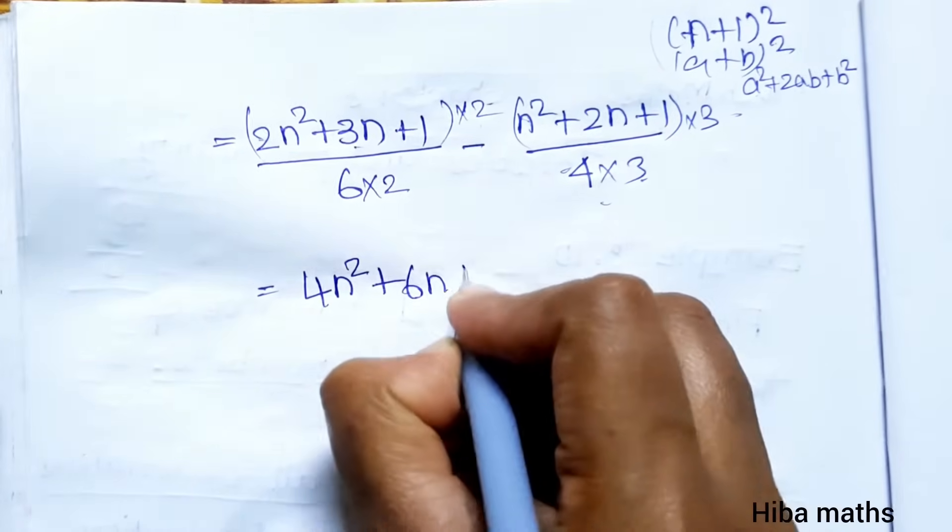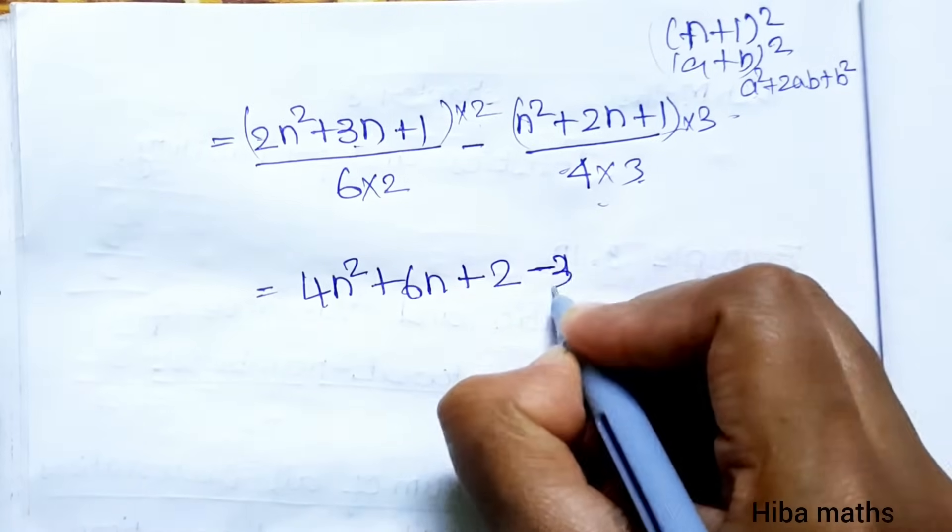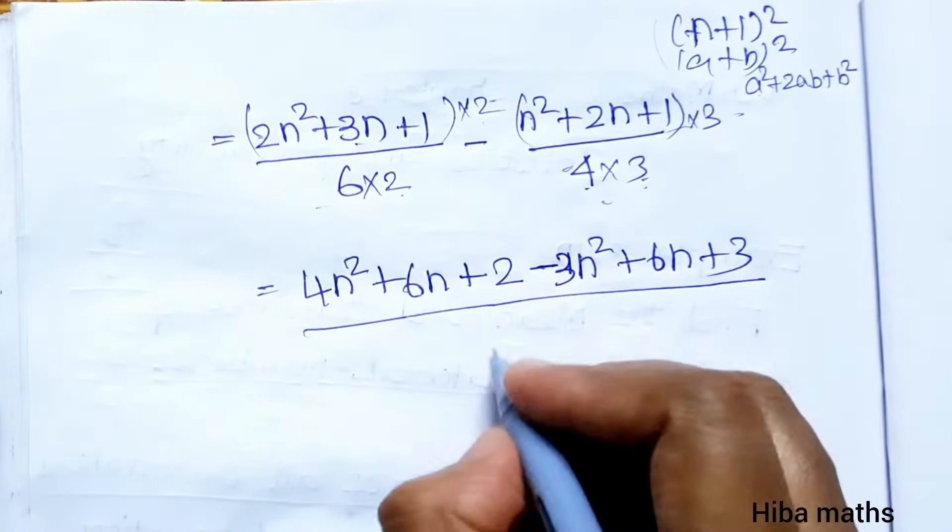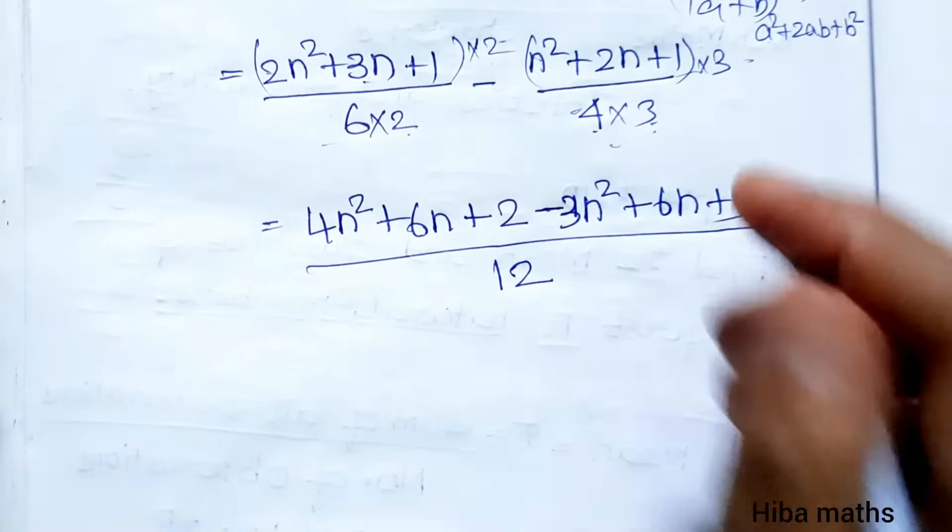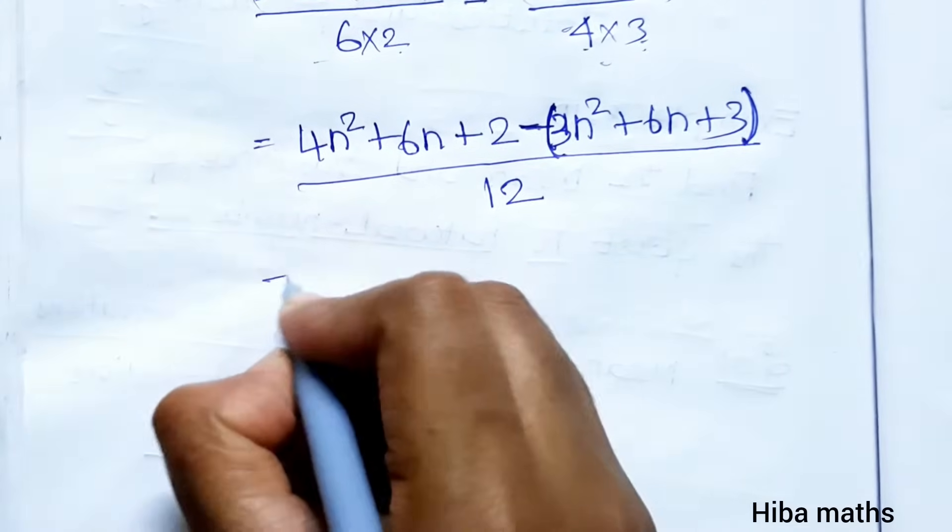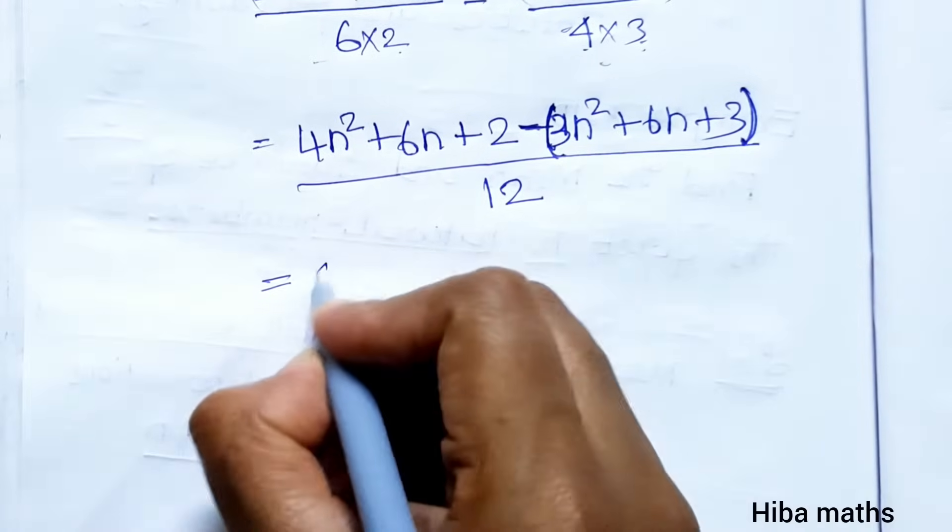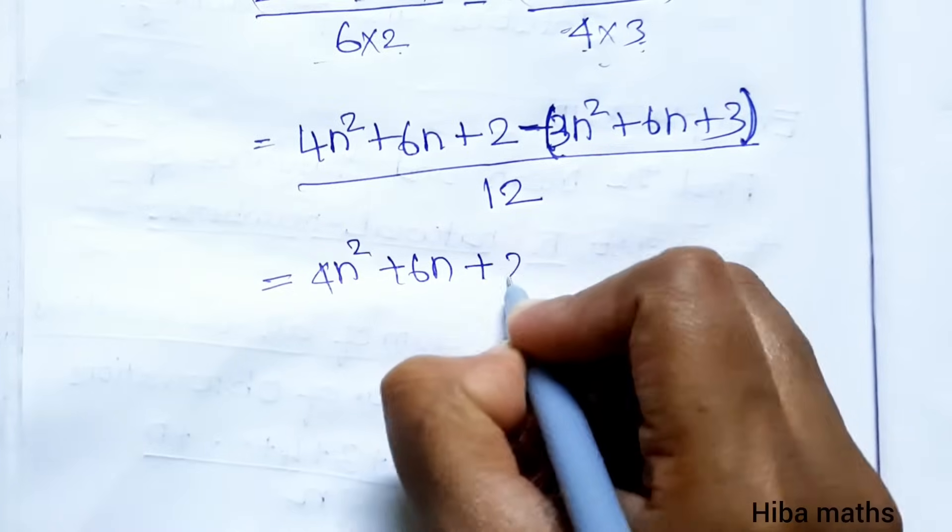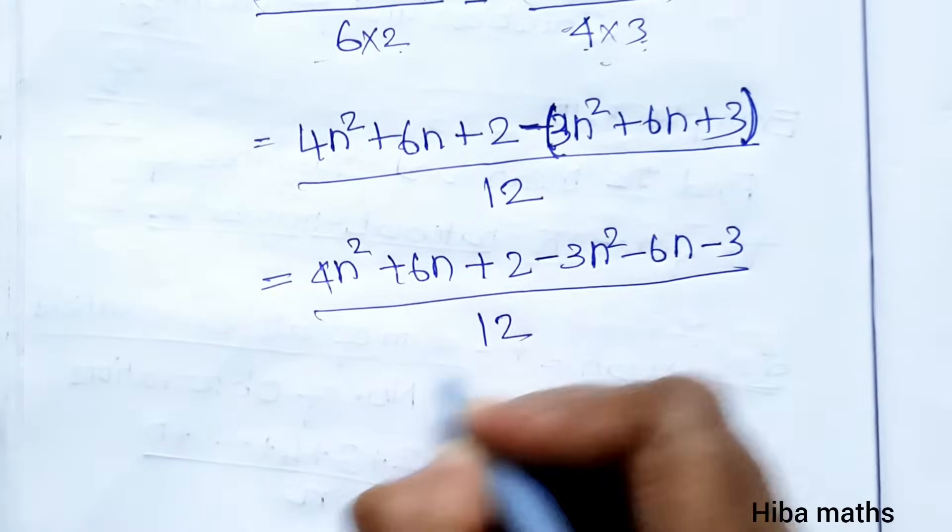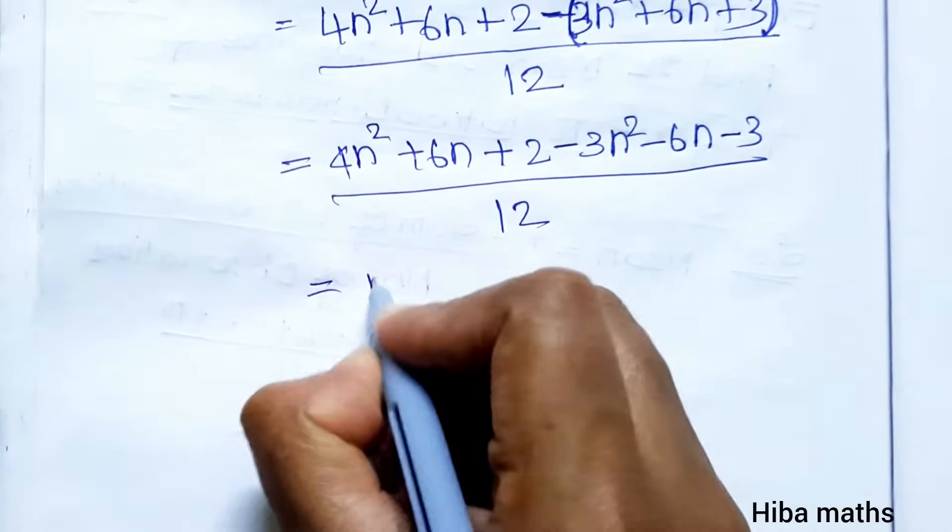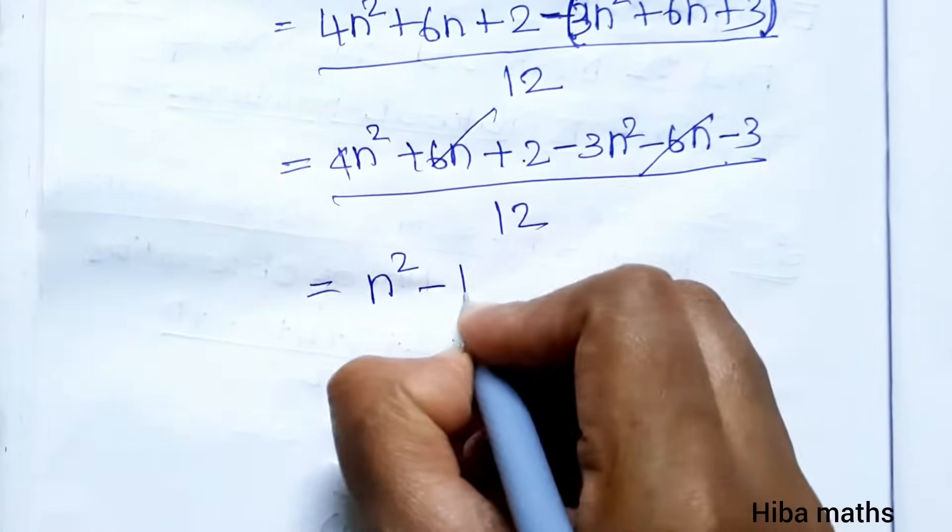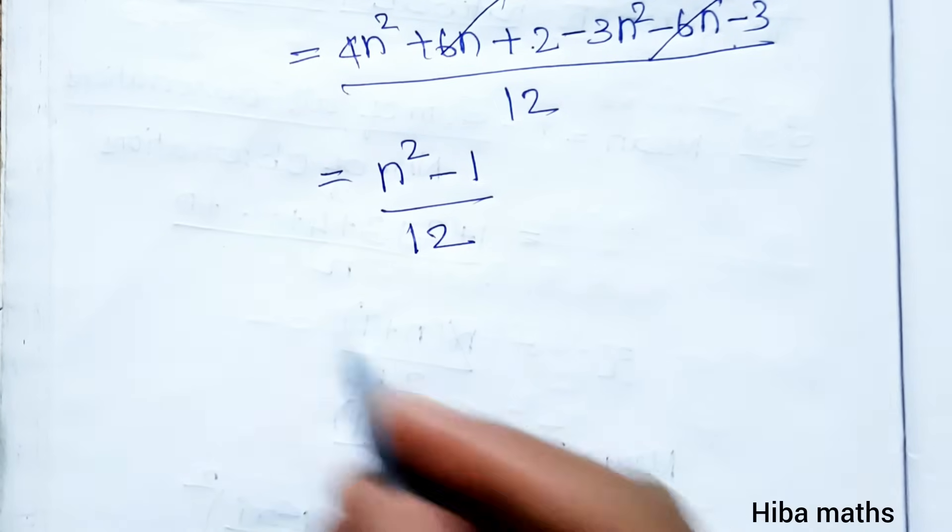6 into n plus 2, 1s are 2, minus 3 into n square, 3n square plus 6n plus 3, divided by 12. First bracket minus inside multiple: 4n square plus 6n plus 2 minus 3n square minus 6n minus 3, divided by 12. 4n square minus 3n square is n square, 6n minus 6n cancel, 2 minus 3 is minus 1, divided by 12. It is the variance value.